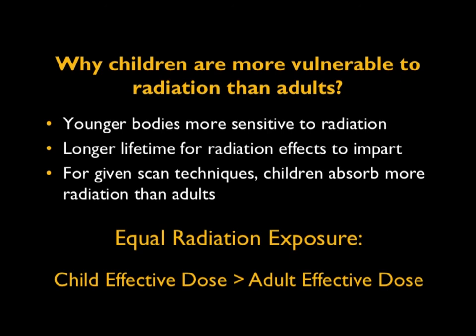There are real reasons why children are more vulnerable to radiation than adults. First and foremost, younger bodies are more sensitive to radiation. They also have a longer lifetime for radiation effects to manifest, because one of the radiation effects—the stochastic effect—usually takes about 3 to 20 years to show up. So the longer lifetime of children is an important consideration.